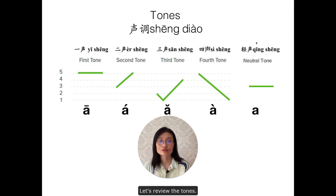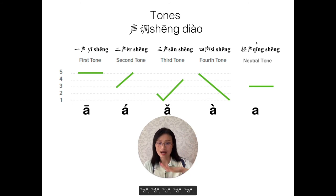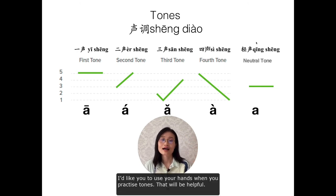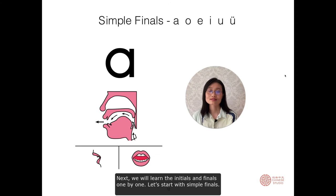Let's review the tones: ā, á, ǎ, à, a. I'd like you to use your hand when you practice tones — that would be helpful. Next, we will learn the initials and finals one by one. Let's start with simple finals.